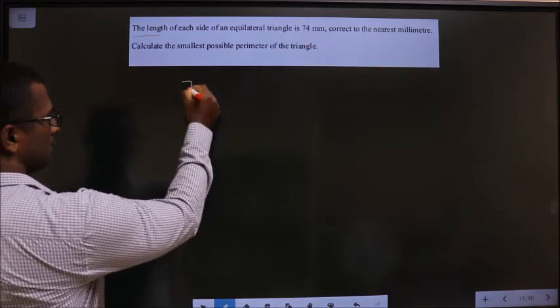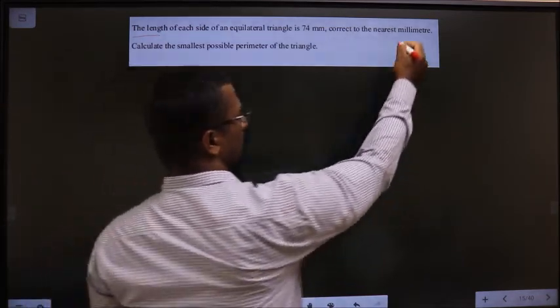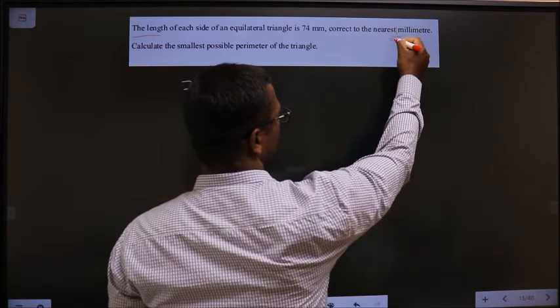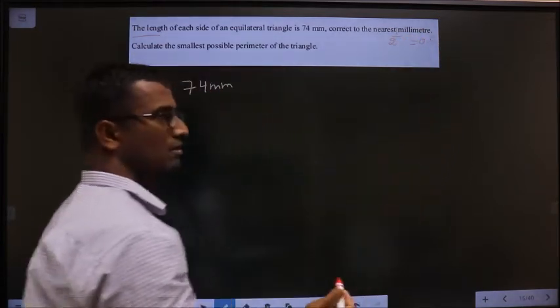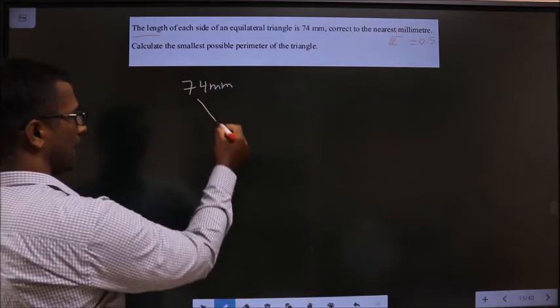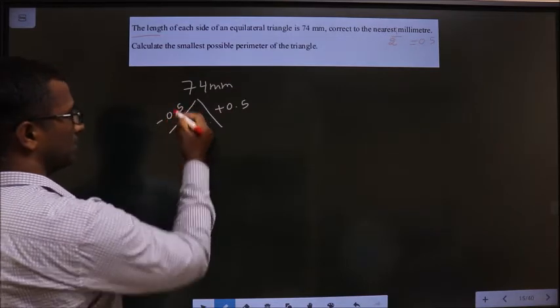Given as 74 mm, this is corrected to the nearest mm. So 74 divided by 2, we get 0.5. So now, add 0.5 to get upper bound, subtract 0.5 to get lower bound.